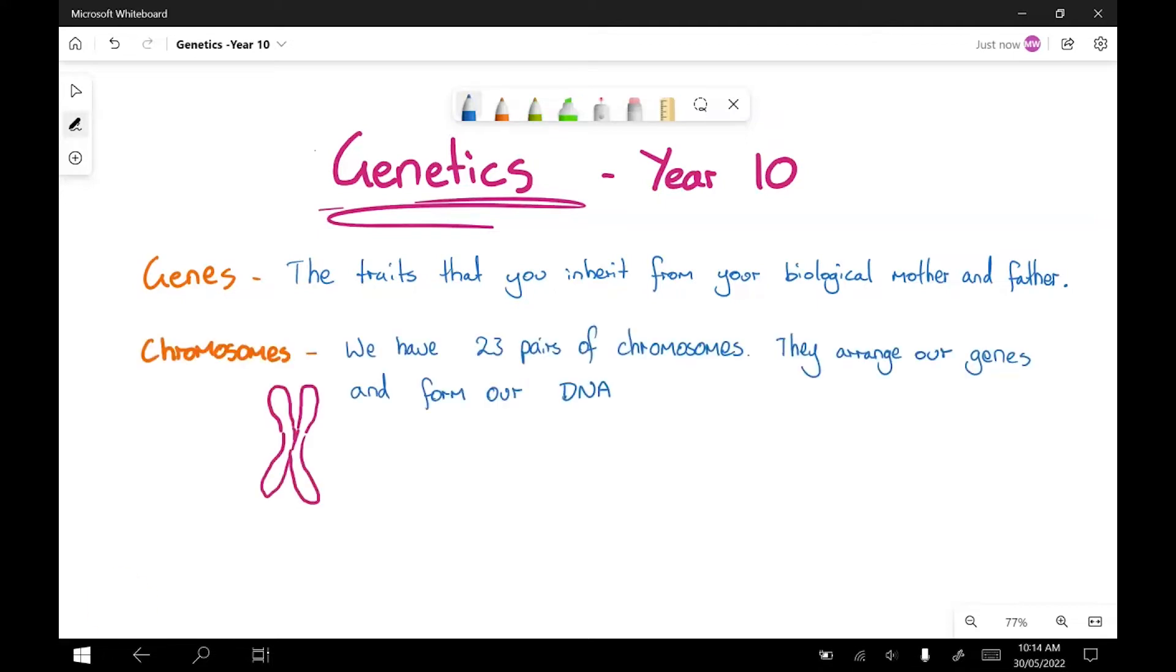The next important term to learn is chromosomes. They kind of look a little bit like that bad drawing that I've done there. We've got 23 pairs of chromosomes, which is important because different species have different numbers of pairs. And they sort of arrange our genes. So all of our genes are arranged along our chromosomes, and that's all the info for our eye color, hair color, and all those other traits.